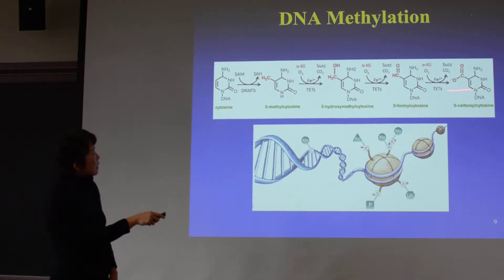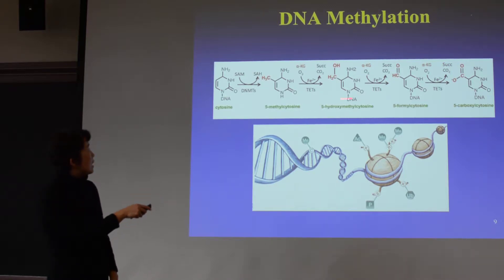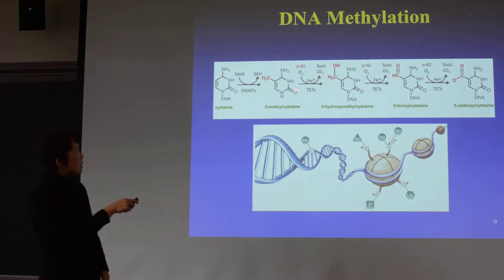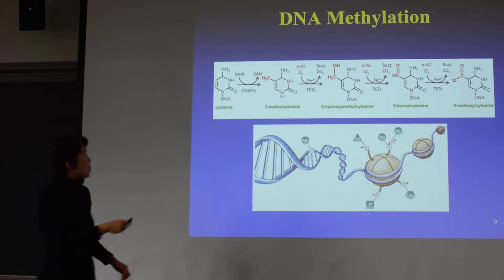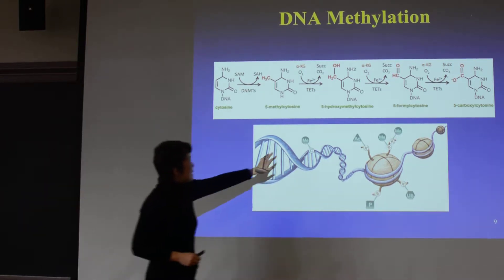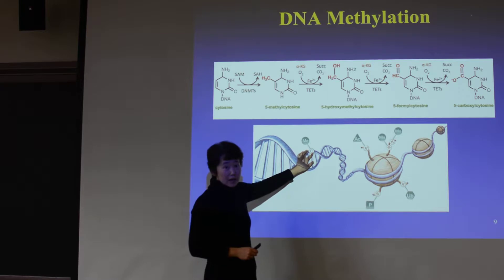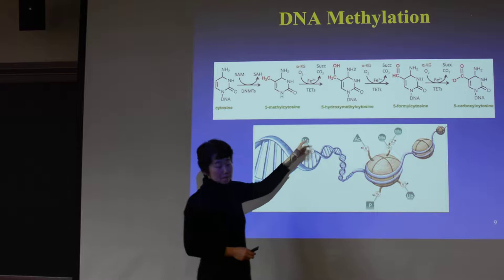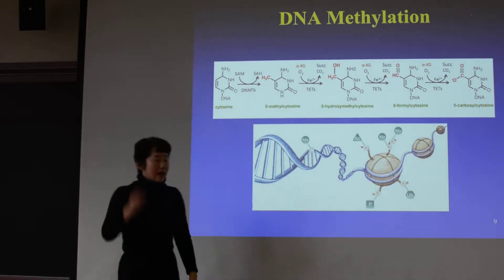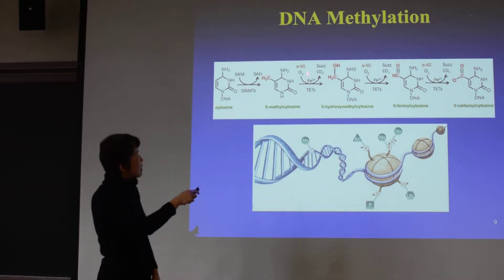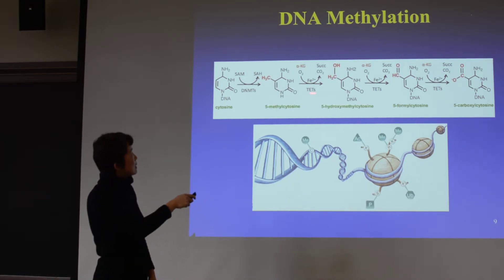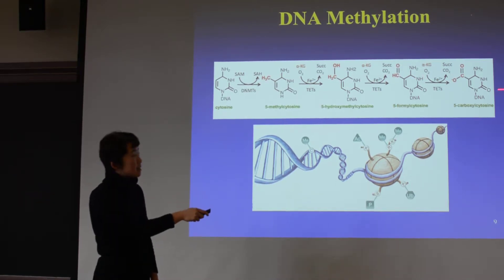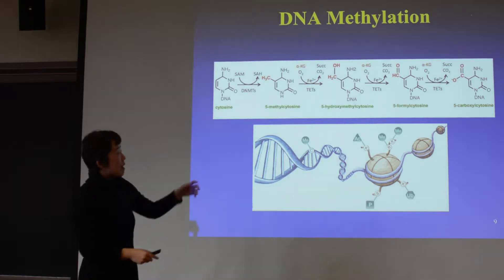These are actually later discoveries that only happened in the last seven or eight years. People previously didn't know how DNA was demethylated. They knew this was happening in the cell, but initially it was considered that once a region is methylated, in order to demethylate, you have to cut it out and replace it with an unmethylated cytosine. But in the last few years, it was discovered there is actually a step-by-step reaction that DNA methylation can be demethylated back into a regular cytosine.